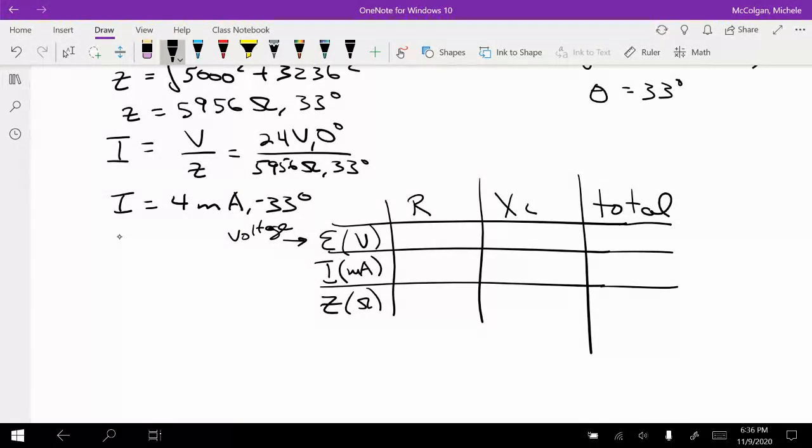So there are a few things we can fill in right away. We know that R is equal to 5,000 and 0 degrees, and XL is equal to 3,236 and 90 degrees. And we know that our total Z is 5,956, and that's 33 degrees. My current is the same. It's a series circuit. So it's the same for all of the elements, for the resistor and for the inductor. And this is going to be 4 milliamps and negative 33 degrees for each.